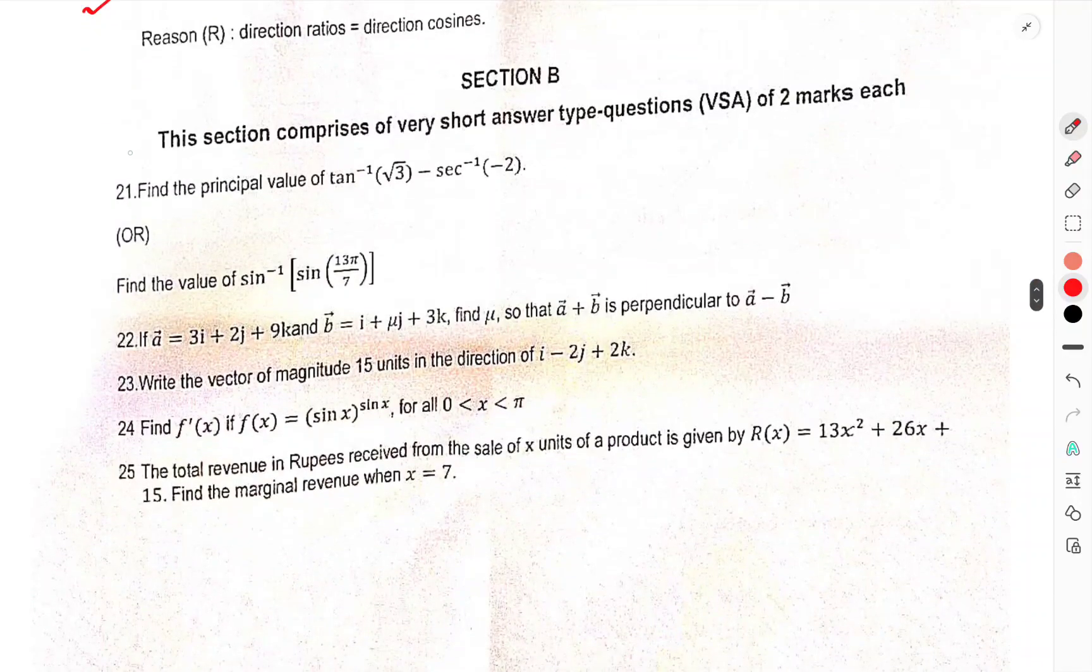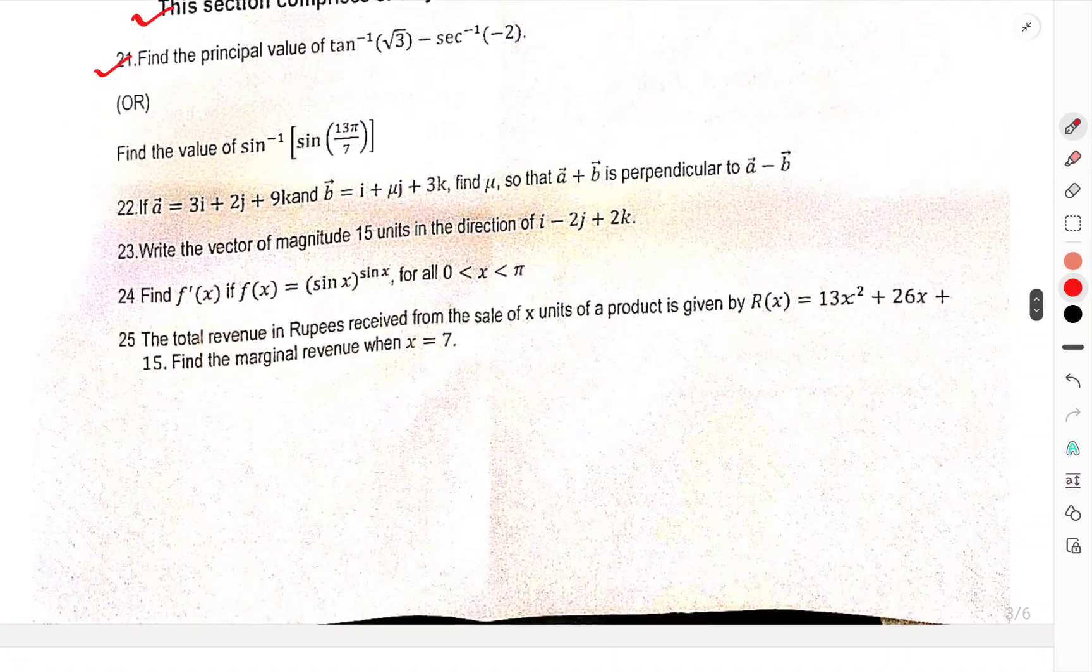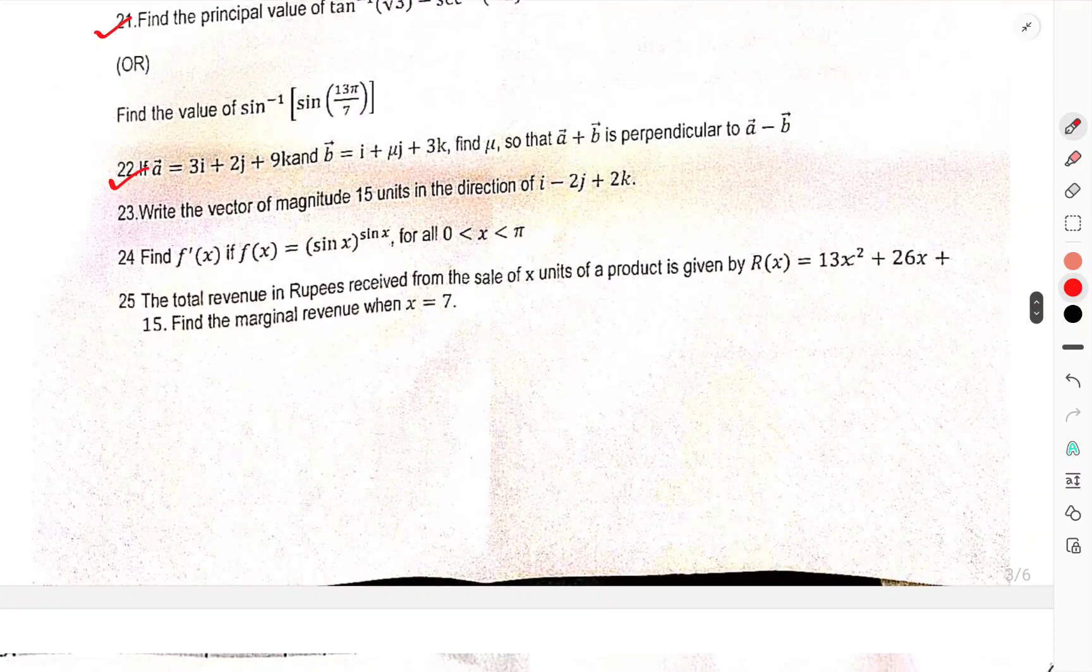Now we have come to section B. This section comprises very short answer questions of two marks each. The principal value of this, find the value of sine inverse this. If A vector is equal to 3I plus 2J plus 9K, B is equal to I mu J plus 3K, then mu is so that A plus B perpendicular to A minus B. Write question number 23.